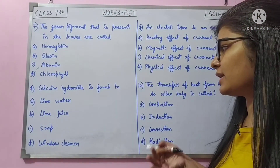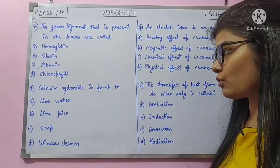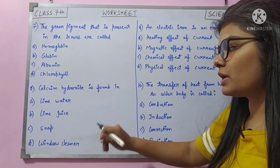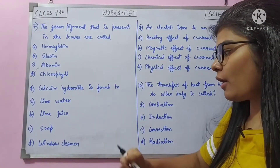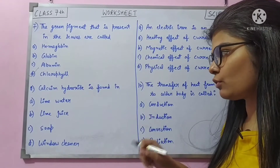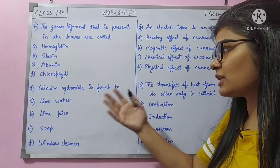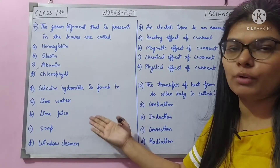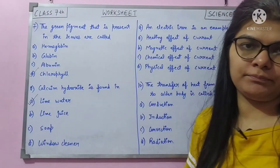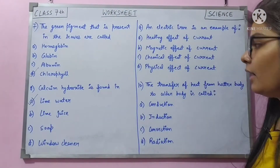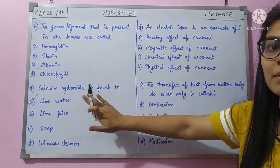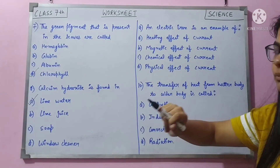Question 8: calcium hydroxide is found in — lime water, lime juice, soap, or window cleaner? If you've read the chapter carefully, calcium hydroxide is lime water. Direct question — answer is A. Be careful not to confuse lime juice with lime water when reading the options.